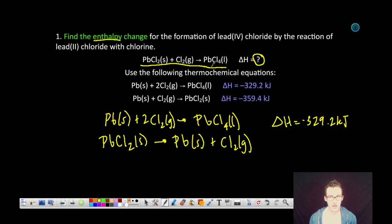I notice that I've got the lead(IV) chloride as a product, which is given to me in this first reaction, but I need both lead(II) chloride and chlorine gas as a reactant. I need to reverse the second equation to give me the lead(II) chloride on the reactant side of that equation. So because I reversed the equation, my enthalpy change will become positive 359.4 kilojoules.